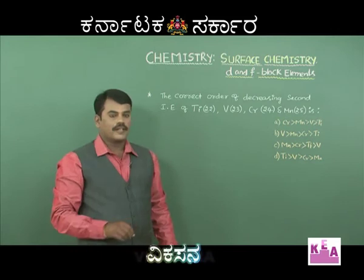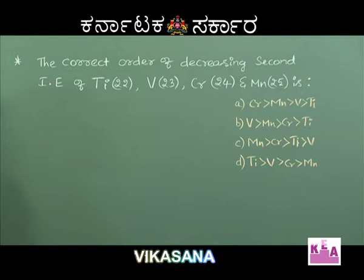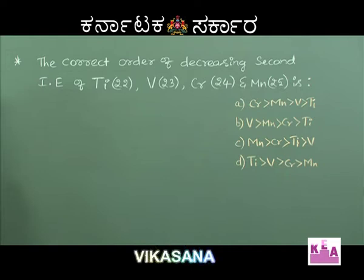The next question: what is the correct order of decreasing second ionization enthalpy of titanium, vanadium, chromium, and manganese? Option A: Cr > Mn > V > Ti. Option B: V > Mn > Cr > Ti. Option C: Mn > Cr > Ti > V. Option D: Ti > V > Cr > Mn.